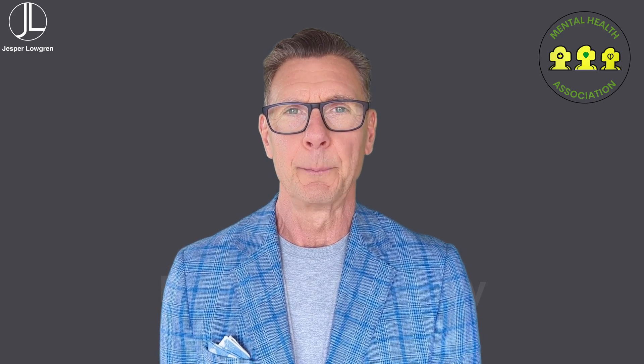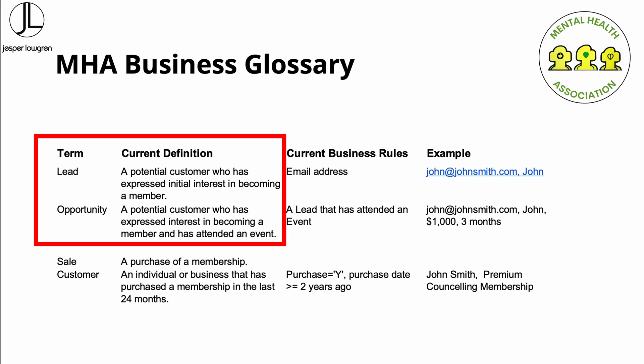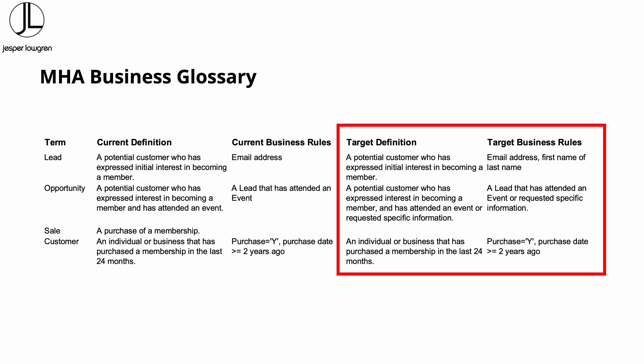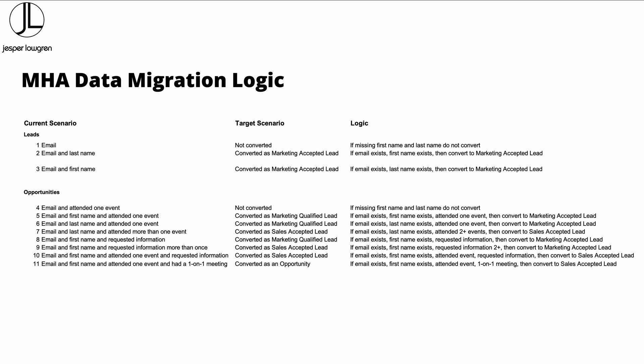My recommendation is to start with a business glossary — a document that describes terms and concepts that are important to an organisation. First, identify the terms and concepts that change due to the transformation; in this example, that would be leads and opportunities. Second, describe the current state logic underpinning leads and opportunities. Third, describe the target state logic underpinning leads and opportunities. Fourth, describe the different scenarios. And fifth, write the logic for each scenario in plain English. Performing this activity before data mapping takes place greatly reduces complexity and increases chances for success. It may seem like an overhead, but the question is not if it's needed — because it definitely is — but when it is done.